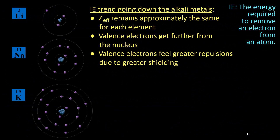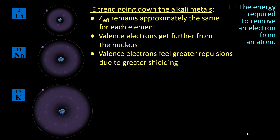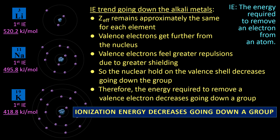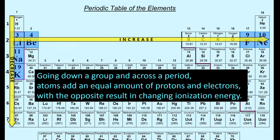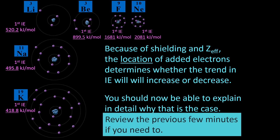The last thing we will look at is the group trend for ionization energy, using the first three alkali metals as an example. The effect of nuclear charge is approximately the same for each element, but valence electrons get further from the nucleus and feel greater repulsions due to greater shielding as you go down the group. So the nuclear hold on the valence shell decreases going down the group, and therefore the energy required to remove a valence electron decreases going down a group. Similar to the size trend, changes in electrons and protons result in opposite trends in ionization energy due to the location of added electrons.